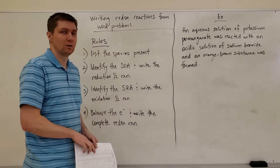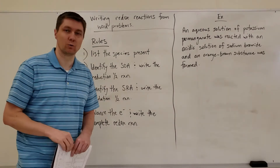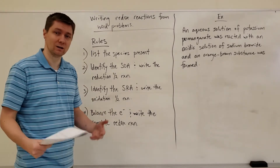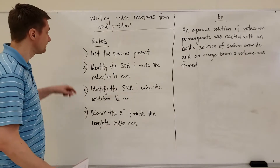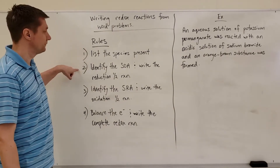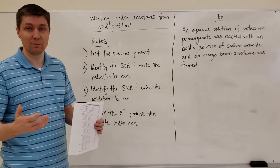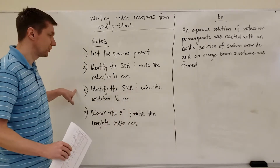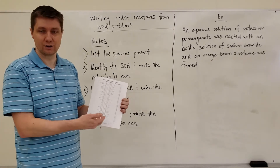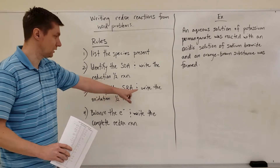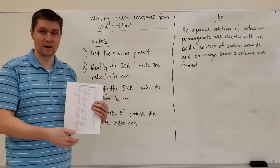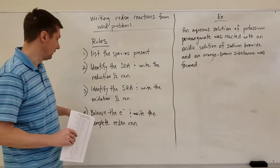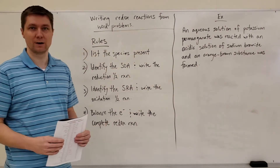We'll use this table when writing redox reactions from word problems. Here are the rules you need to have memorized for an assessment. First, list the species present. Then identify the strongest oxidizing agent from that list and find its half reaction in the chart. Do the same for the strongest reducing agent, making sure to write the oxidation half reaction as the reverse of what's in the chart — because it's an oxidation, not a reduction. Then balance the electrons and write the full, complete redox reaction.